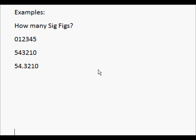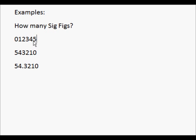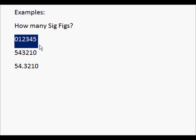Okay, let's do an example. How many significant figures are there in the following numbers? The first one doesn't have a decimal point, so we count from the first non-zero to the last non-zero — that is 1, 2, 3, 4, 5: five significant figures. What about this one? There's no decimal point, so you just count from the first non-zero to the last non-zero: 1, 2, 3, 4, 5 — five significant figures.